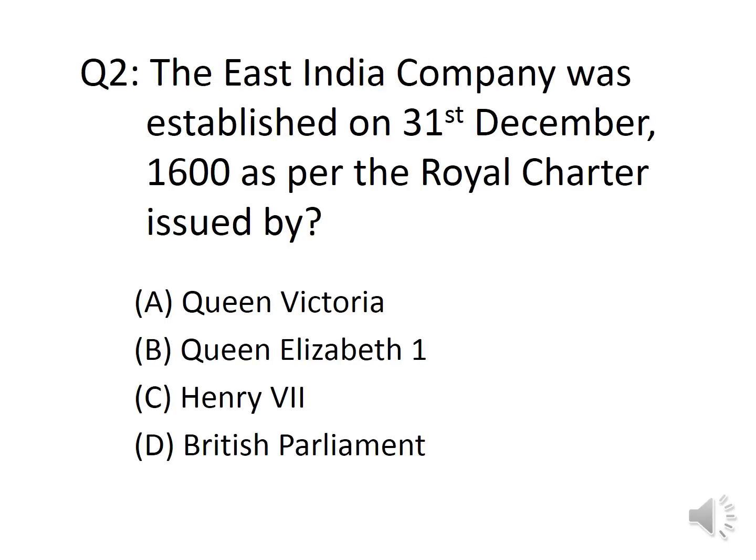Question 2: The East India Company was established on 31 December 1600 as per the Royal Charter issued by: A. Queen Victoria, B. Queen Elizabeth I, C. Henry VII, D. British Parliament. The answer is Option B, Queen Elizabeth I. There are two questions that can be set from this — this one, and when was the East India Company established? The answer is 31 October 1600.